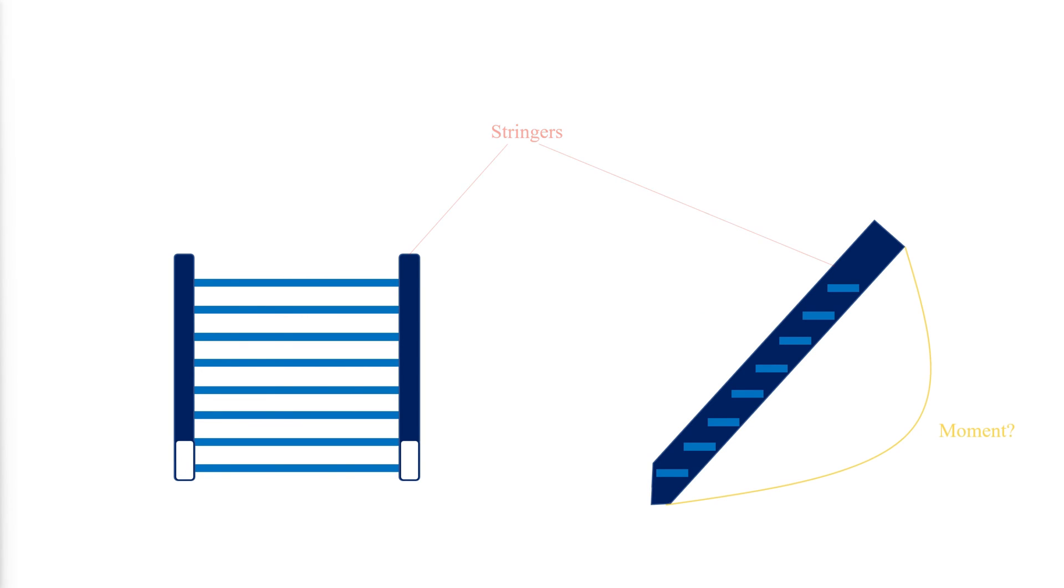But how would we analyze the internal forces of a stringer? In computing the dead load for sloping stringer beams, the additional length related to the sloped member self-weight must be taken into account when using the projected length.